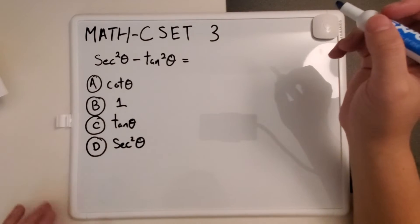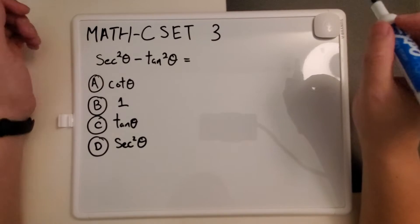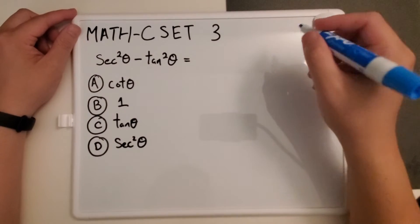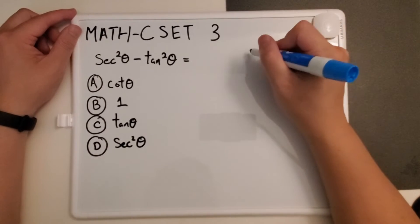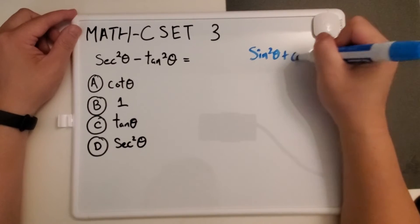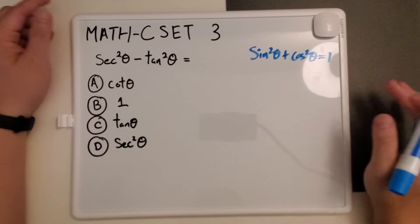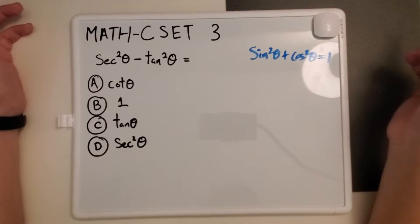Whenever you see some trig identities, it is always good to have one trig identity memorized because everything kind of stems from that. So let's just write on the side the most basic trig identity: sine squared theta plus cosine squared theta equals 1. From here we can actually talk about all the other ones.